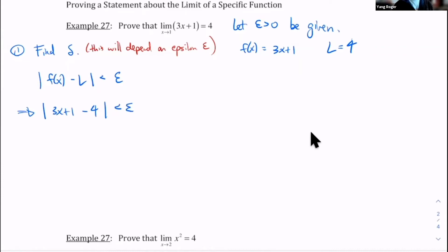Okay, now we're going to simplify that inside part. So when we simplify that inside part, that tells you that 3x minus 3 is less than epsilon. Does anyone have any suggestions for what I should do next? Can you factor out the 3? I can. I think that's a great idea.